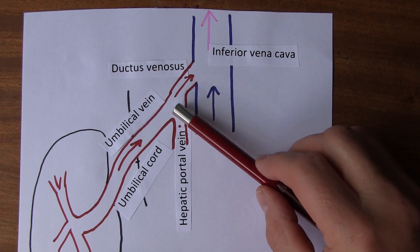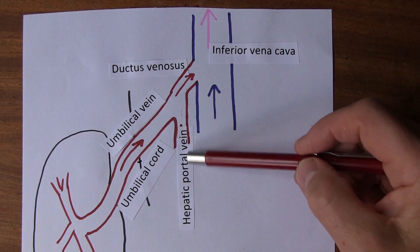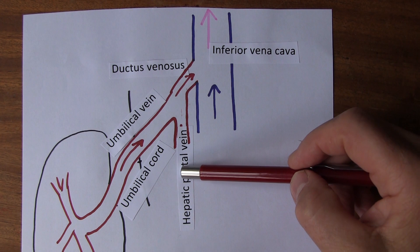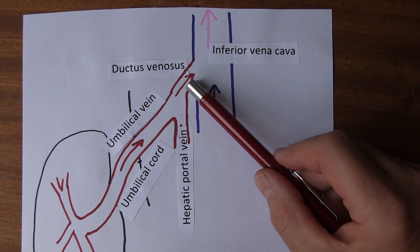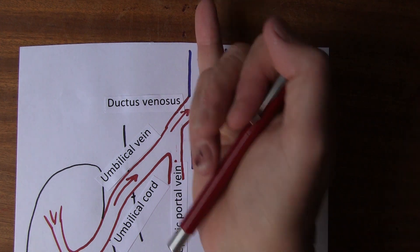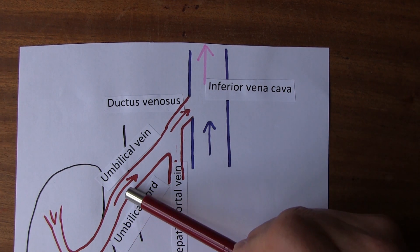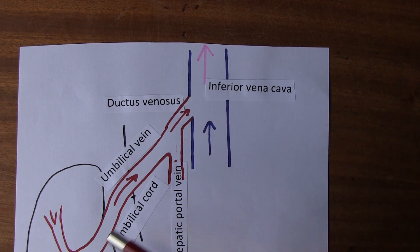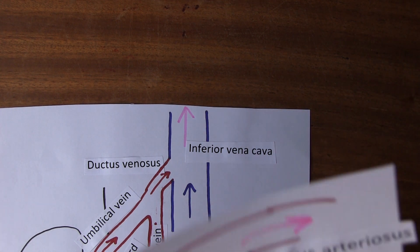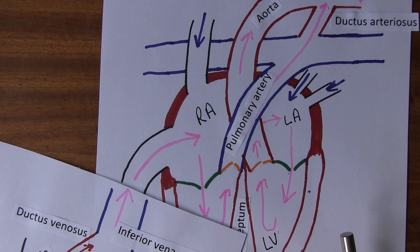Near the liver, the umbilical vein divides. Part of the blood goes into the hepatic portal vein to go to the baby's liver, and increasing amounts go to the fetal liver as gestation progresses. The rest goes through a special shunt vessel called the ductus venosus, which is only present in the fetus. The ductus venosus takes blood back into the inferior vena cava, where it mixes with deoxygenated blood from the baby's lower body. This results in mixed oxygenated and deoxygenated blood travelling all the way up through the inferior vena cava.